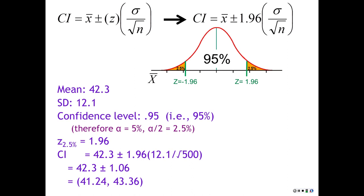That looks pretty tight. With a sample size of 500, which is a ridiculously large sample size, you have a very precise estimate. You're much more confident that you know where the mean is — you're 95% confident that the mean lies within a range of just two points, because you had such a big sample size.